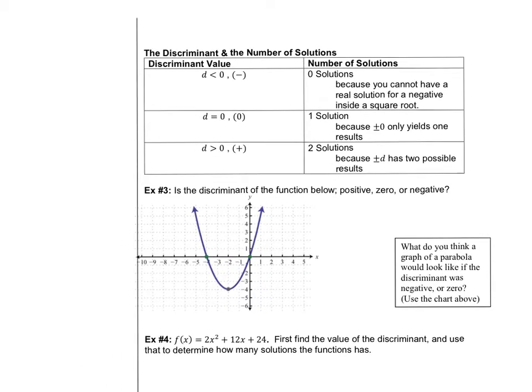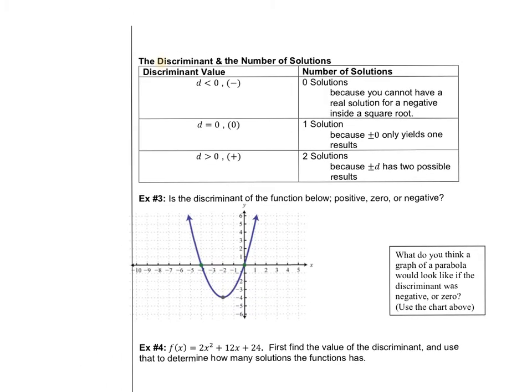Just a quick review, you saw on the last page what the discriminant is. The discriminant is the part inside the quadratic formula. So here's your quadratic formula, negative b plus or minus square root b squared minus 4ac all over 2a. The discriminant is this part inside the square root.